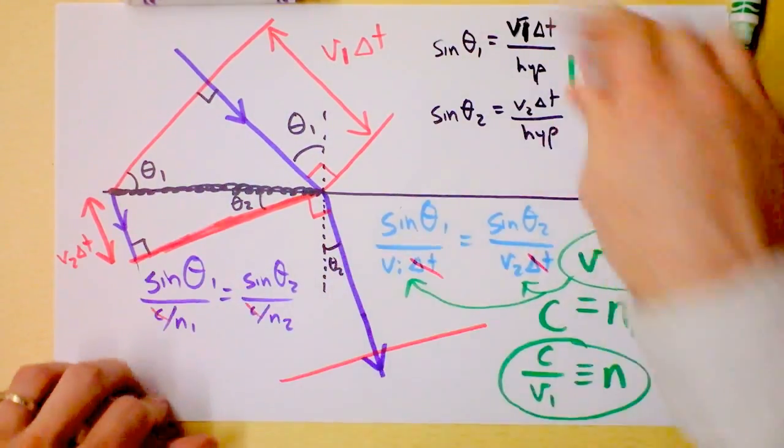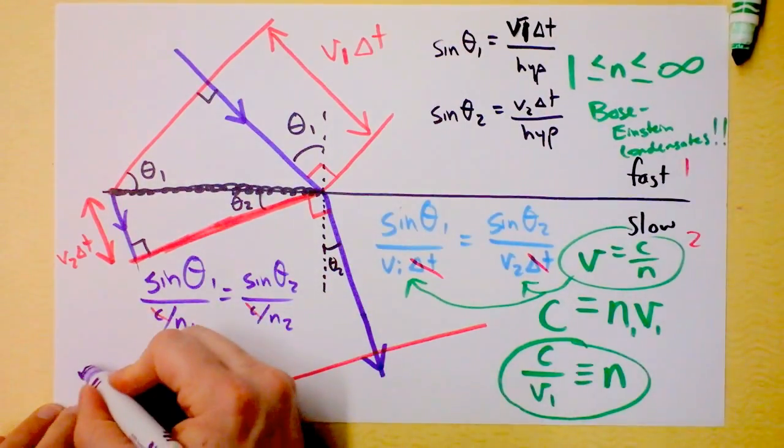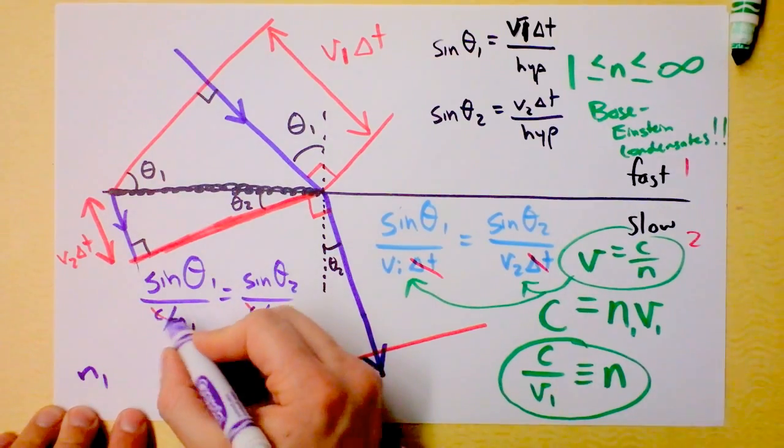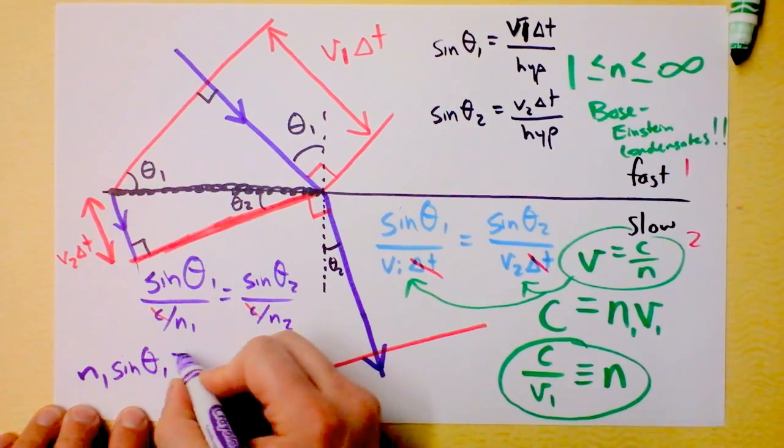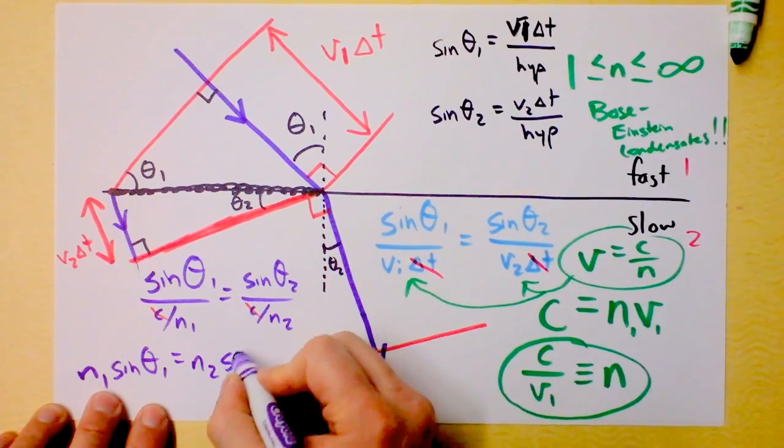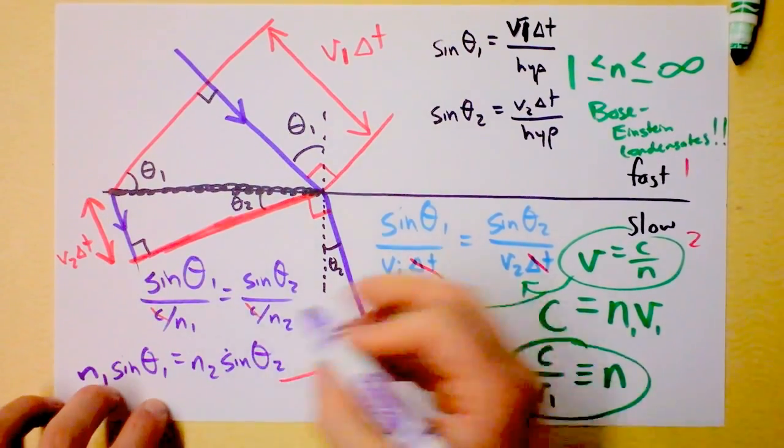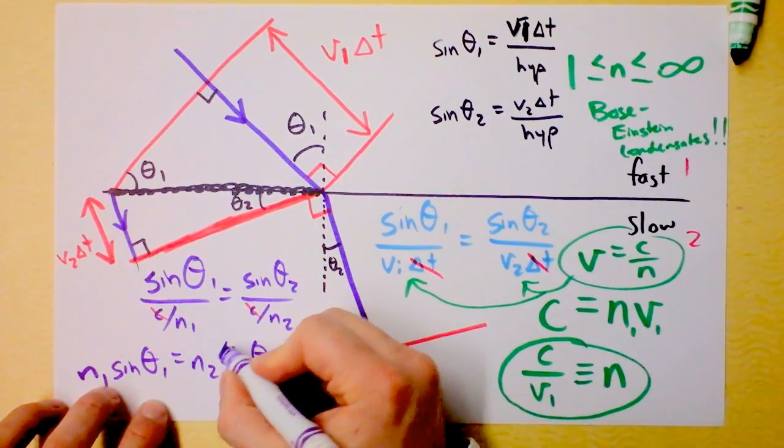There's a c here, and there's a c there, and I get n1, now this is in the denominator of the denominator, so it's n1 times sine of theta 1 is n2 times sine of theta 2. This is how, sorry about that dot there.